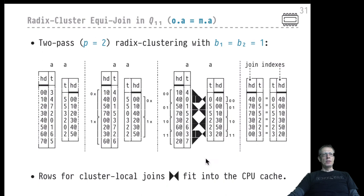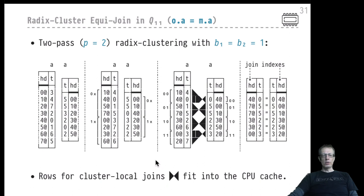This is the idea of a hash-based join algorithm that is aware of resource constraints — specifically the data cache and TLB constraints of modern CPUs. It leads to a phase-based approach where each phase considers only enough bits to distribute into a number of buckets that does not overwhelm the data and address caches.